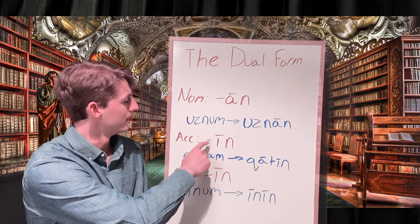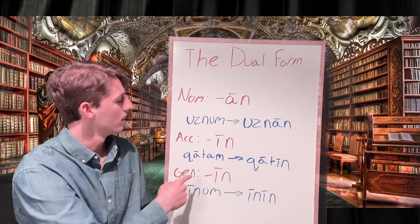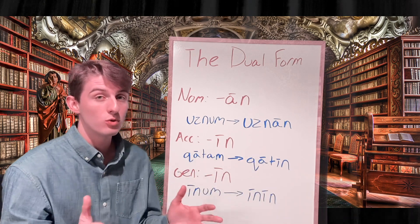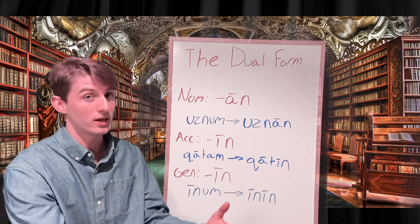The accusative would be IN. Here we have katam, which means hand in the accusative case. It's going to be katin to mean two hands as the object of our verb.